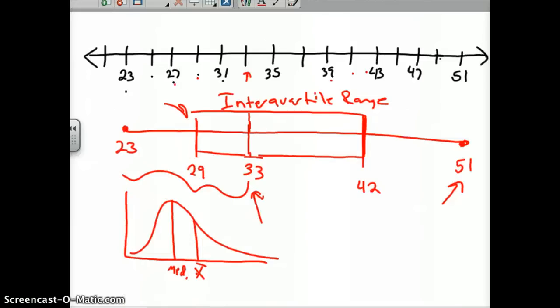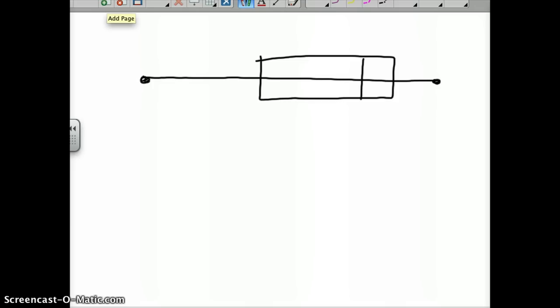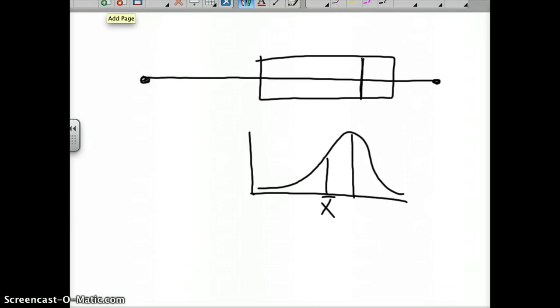One last thing—to represent shape of the data. Let's say you had a box plot like this, where your median is to the right. This would be skewed left data. If this was a frequency histogram, your data would look more like this, where your median's here and your mean is here. This would be skewed left data.